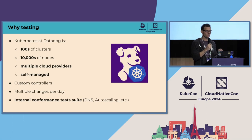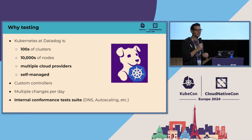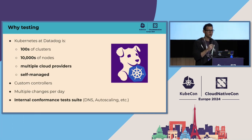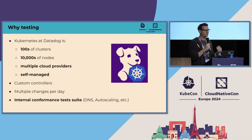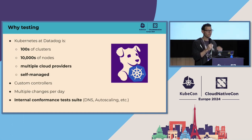We use the end-to-end framework to build our own internal conformance test suite. For example: is DNS working as expected? Not only can I resolve internal or external domains, but can I do cross-cluster or cross-datacenter DNS resolution? Can I provide capacity to workloads? We have a bunch of internal controllers to manage the node lifecycle — are they working as expected? Can I decommission nodes without causing disruption?